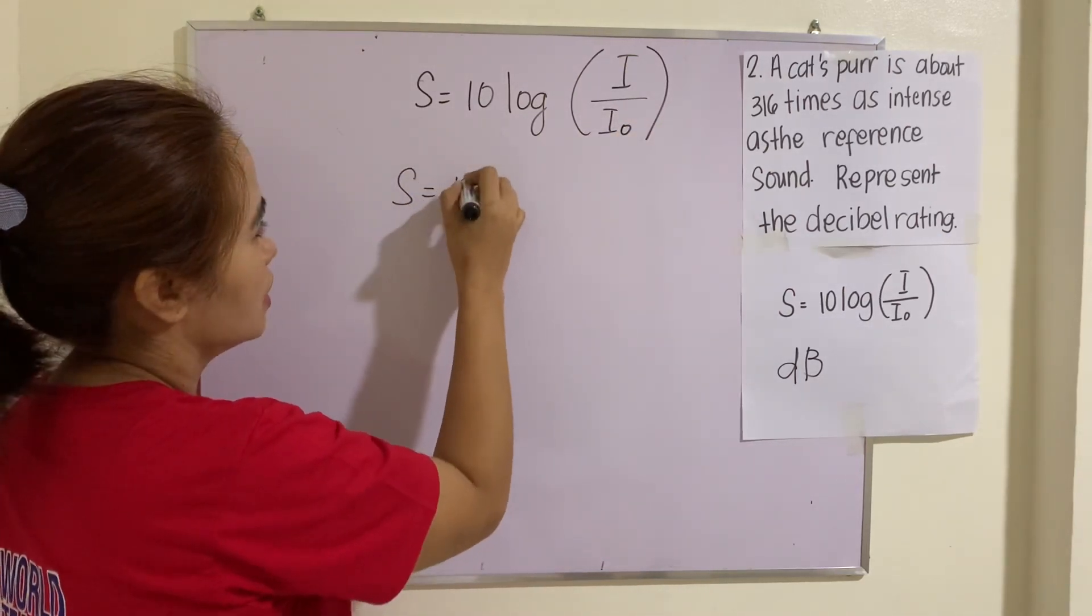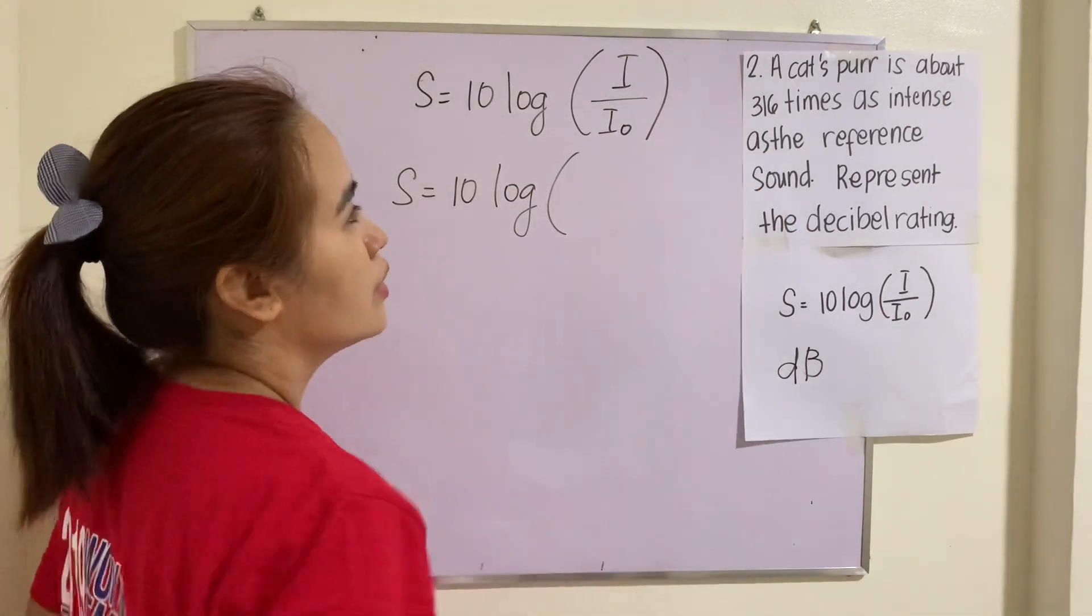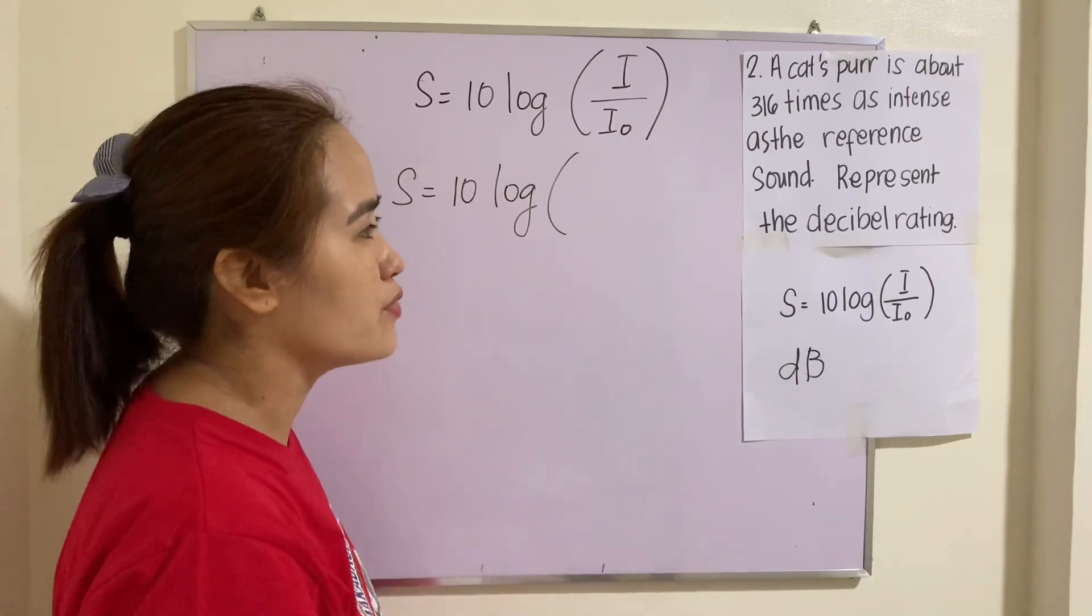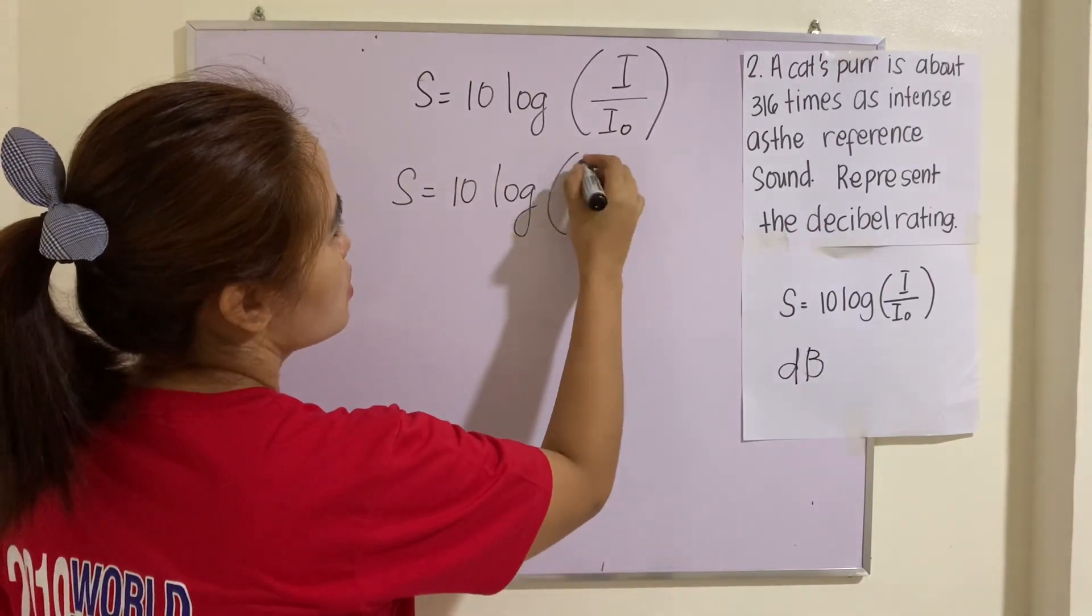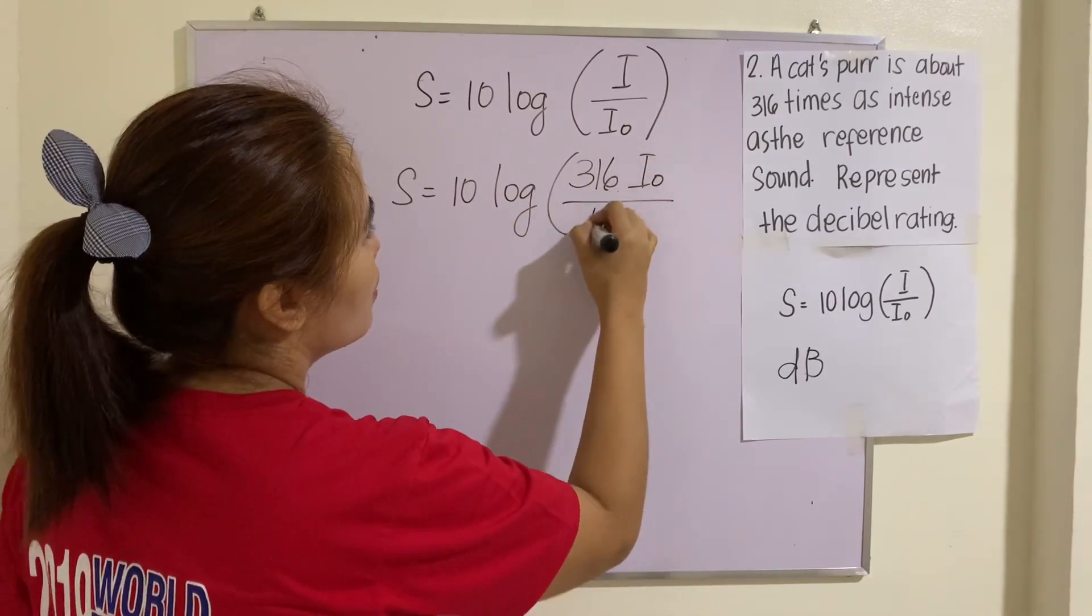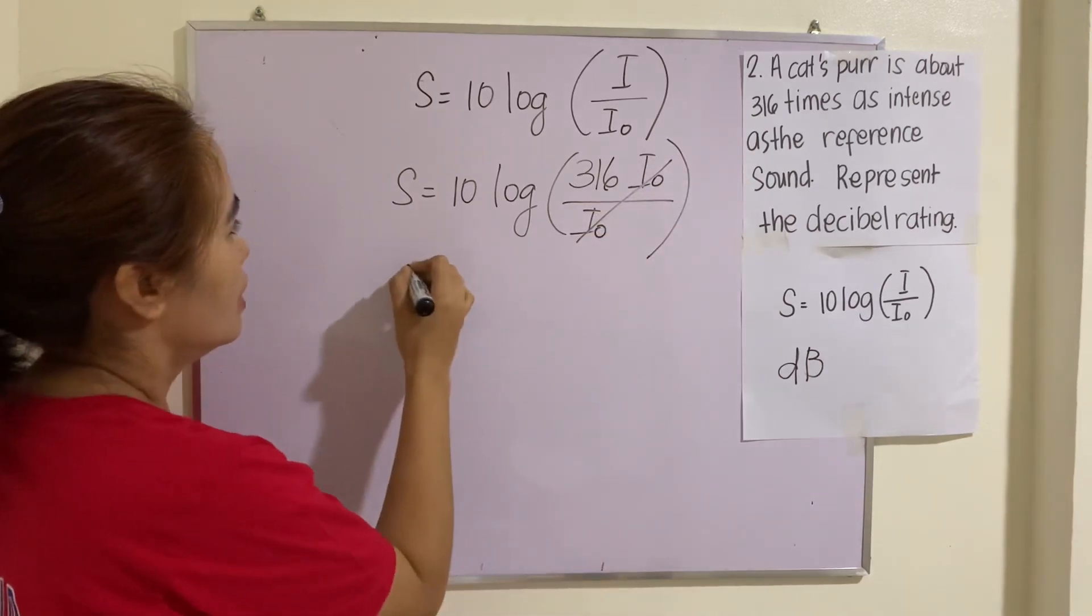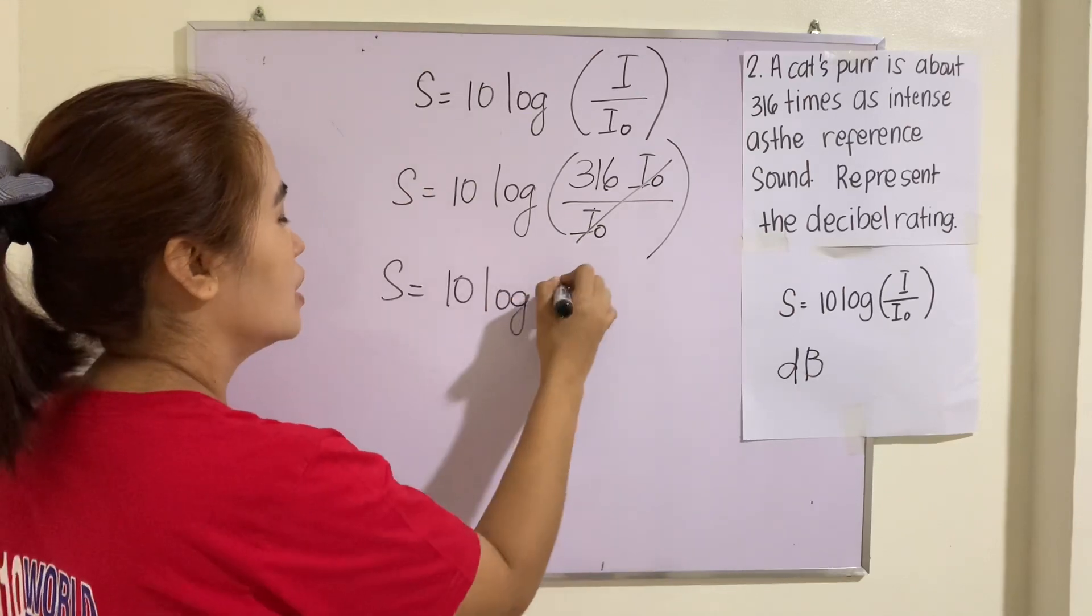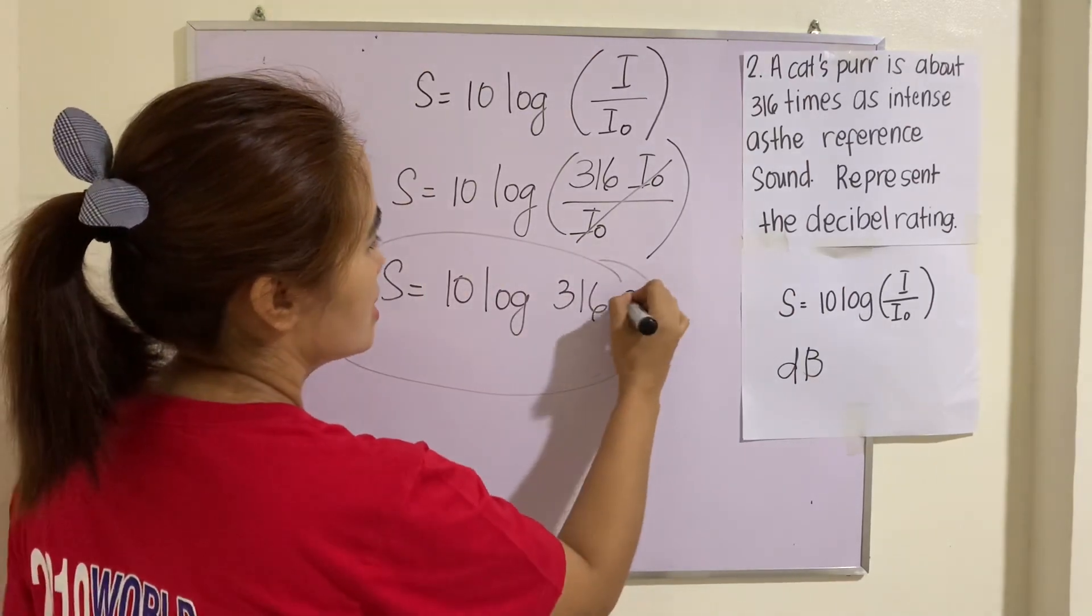So this one is 10 log(I/I_0). So S = 10 log of, it says here 316 times as intense as the reference sound. So reference sound is I_0. So 316 I_0 over I_0. So S now is equal to 10 log 316. Of course, this one is in decibel. That's it.